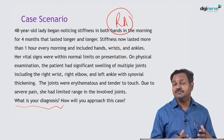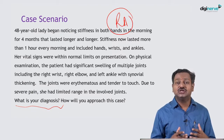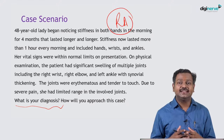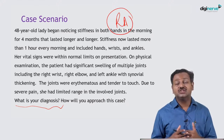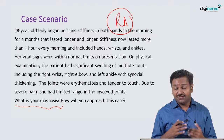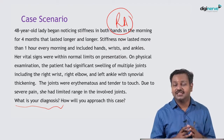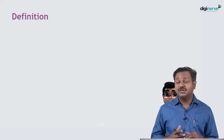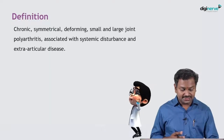We have a diagnostic criteria for rheumatoid arthritis based on the number of joints involved, whether inflammatory markers are elevated, immunological criteria, and duration. If these criteria are met, it becomes rheumatoid arthritis. We'll be discussing how to diagnose and manage a patient with rheumatoid arthritis in today's session.